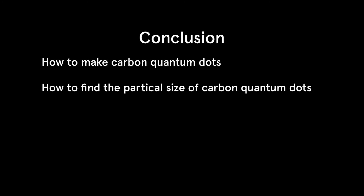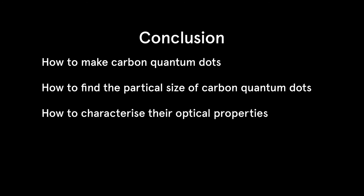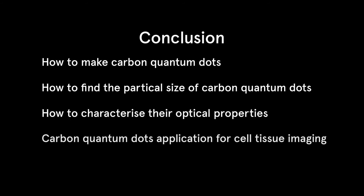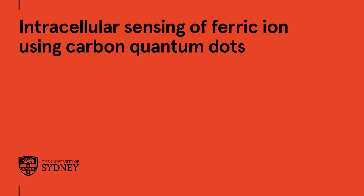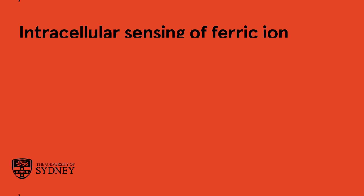So now we know how to make carbon quantum dots, how to find the particle size distribution, characterize their optical properties, and their application for cell and tissue imaging. Now let's go see how JJ will prepare our sample for the cell studies. Hi, I'm JJ, and now I'll be showing you how to use the carbon quantum dots we just synthesized to introduce them into cells as a biosensor to sense ferric ions in the cells.